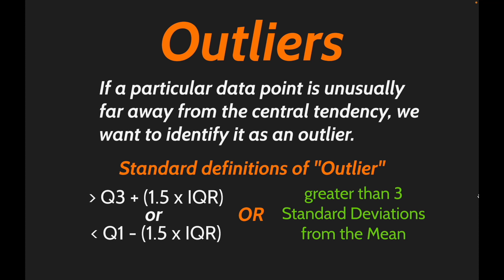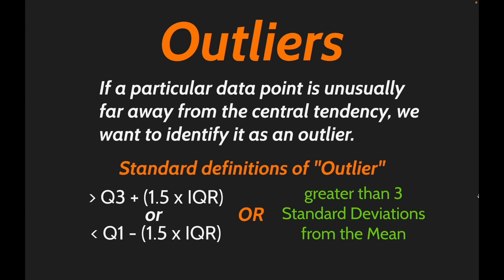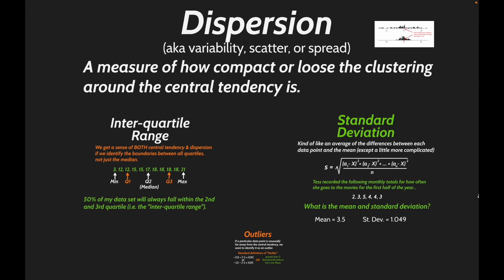Similarly, with interquartile range, any data point more than 1.5 times the interquartile range above the third quartile, or more than 1.5 times below the first quartile, is an outlier — a data point so far from the central tendency that we can think of it as atypical and not truly representative of the group. That captures our concept of dispersion.